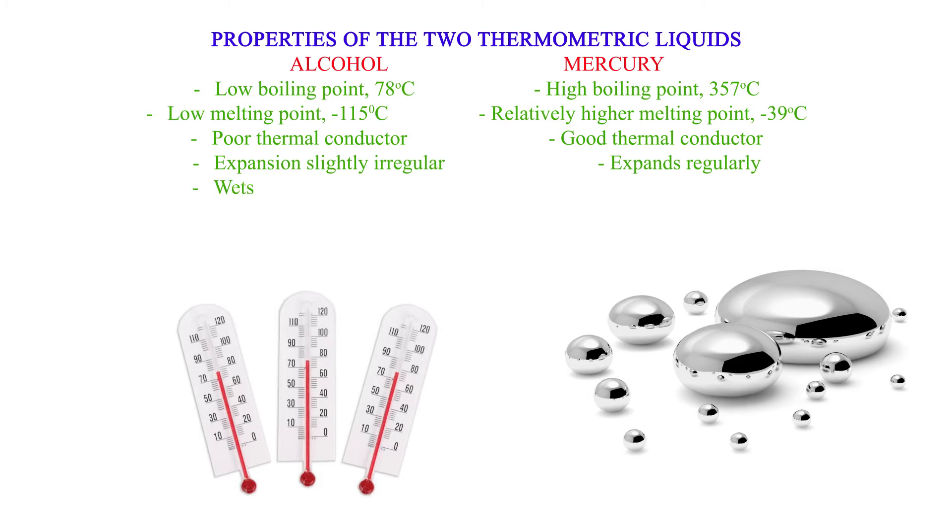Alcohol: Wets glass. Mercury: Does not wet glass. Alcohol: Colored to make it visible. Mercury: Opaque and silvery.